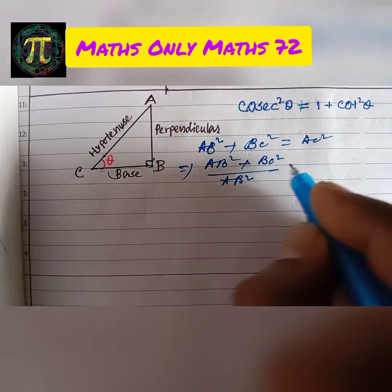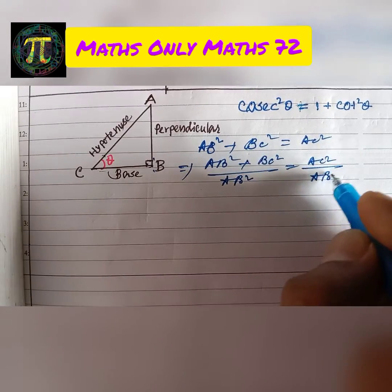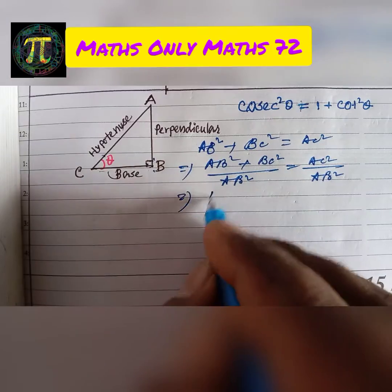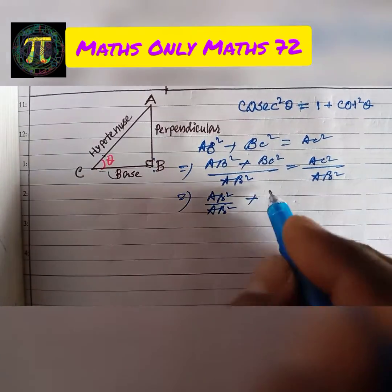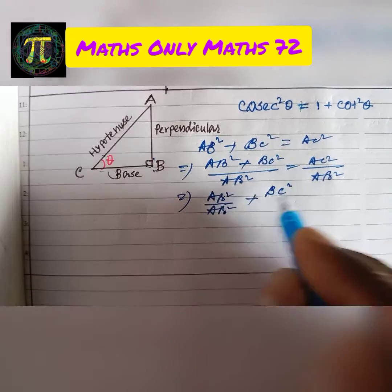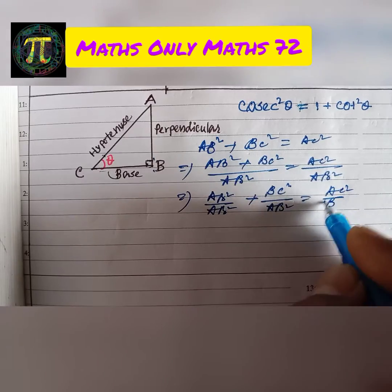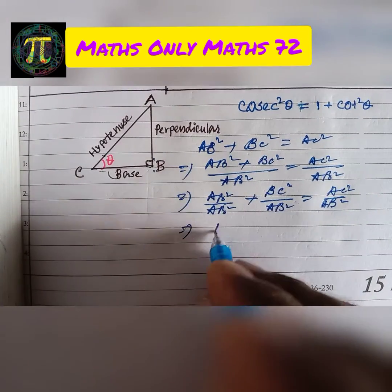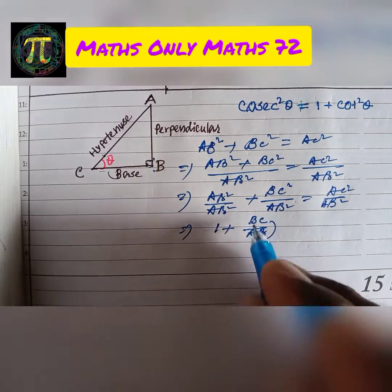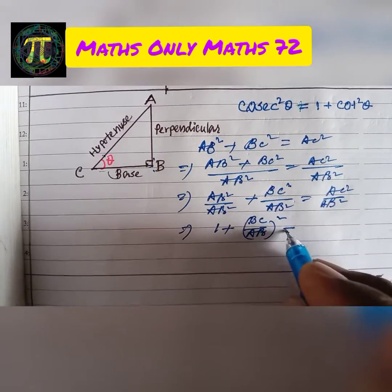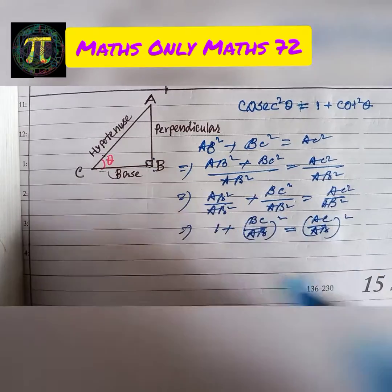We divide both sides by AB square. So we get AB square by AB square plus BC by AB whole square equals AC by AB whole square.